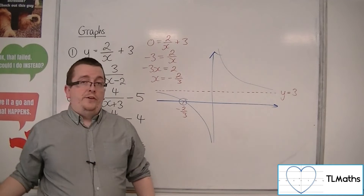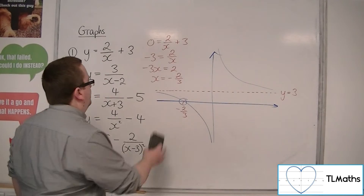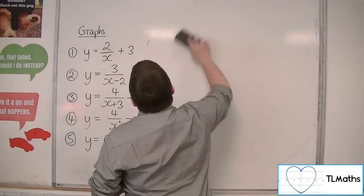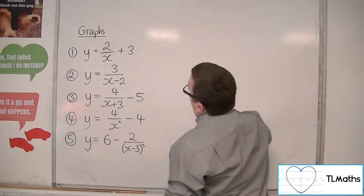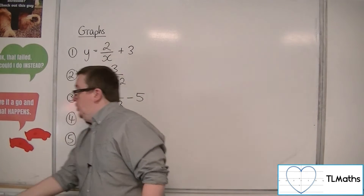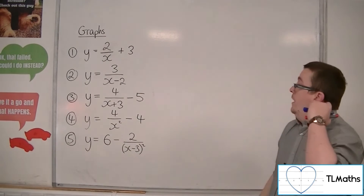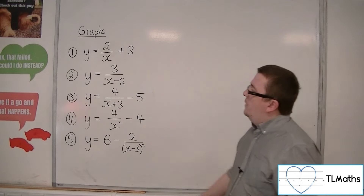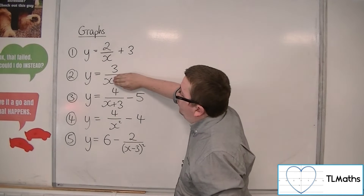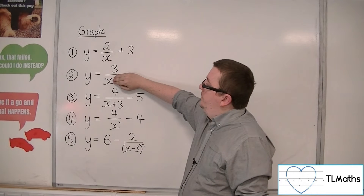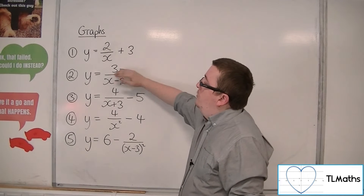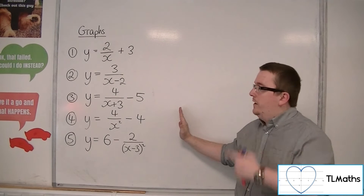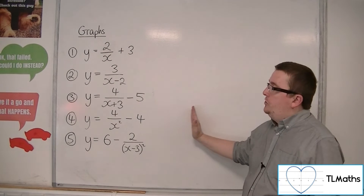For number 2, y is equal to 3 over x minus 2. We know what 3 over x looks like. When we replace x with x minus 2, that translates the curve 2 to the right.